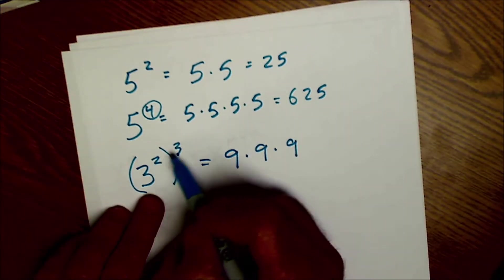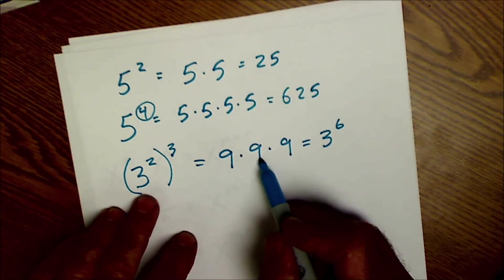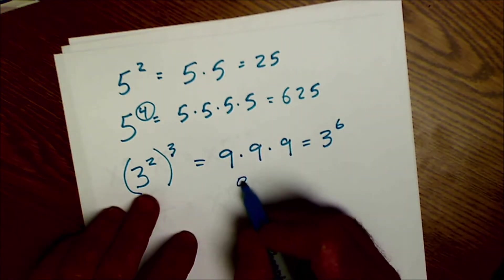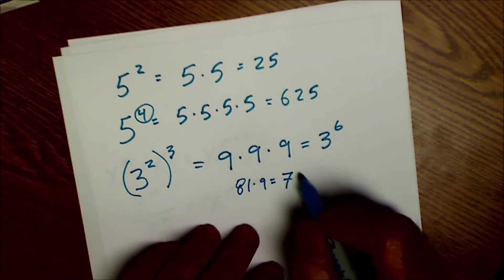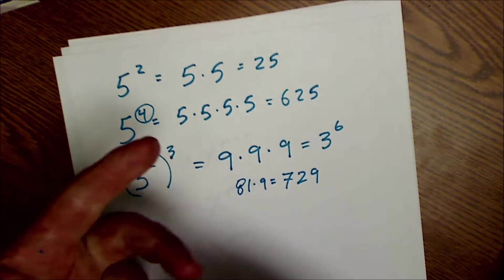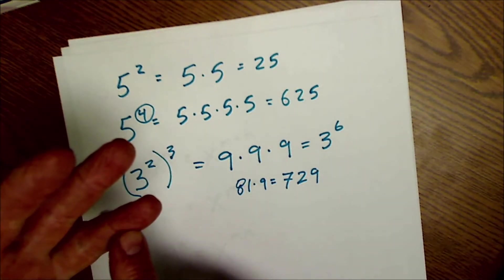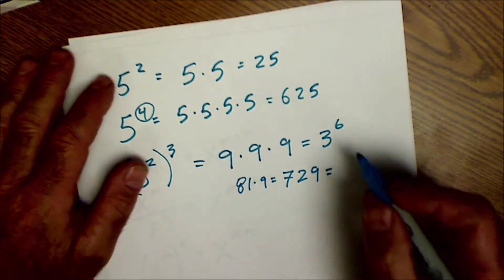The rule would be you multiply these together to get 3 to the 6. 9 times 9 is 81. 81 times 9 is, what is that, 729 maybe. And then 3 to the 6 would be 3, 9, 27, 81, 243, 729. So it would be the same thing.